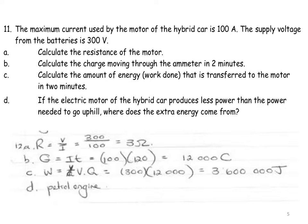The maximum current used by a motor of a hybrid car is 100 amps. The supply voltage is 300 volts. What is the resistance? Easy. You're going to say R is equal to V divided by I, and you get 3 ohms, because you've got the potential difference and the current.